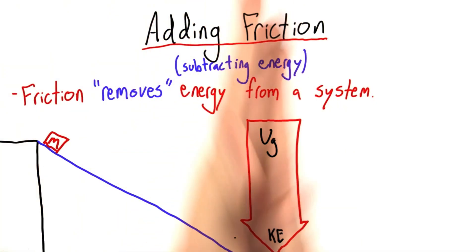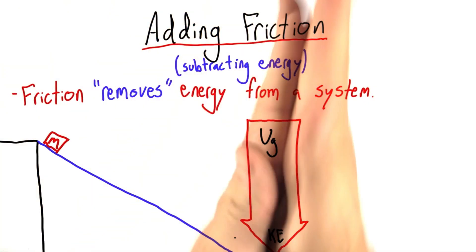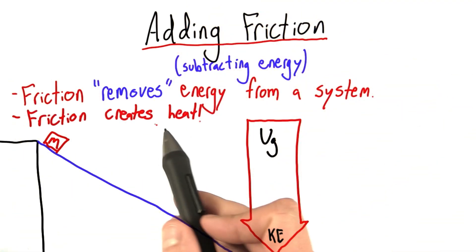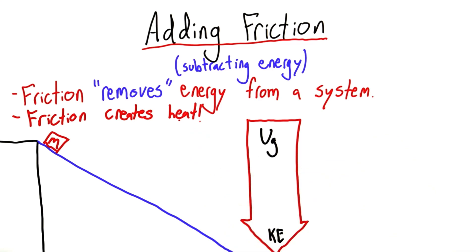Go ahead and rub your hands together for a second and do it really hard. They get really hot. In fact, friction creates heat. This heat is another form of energy.